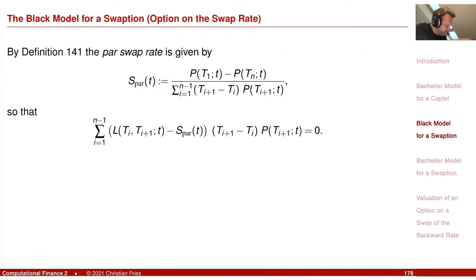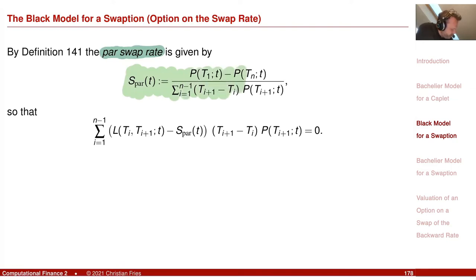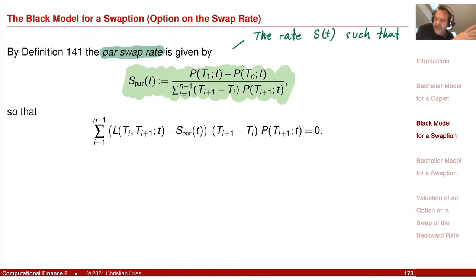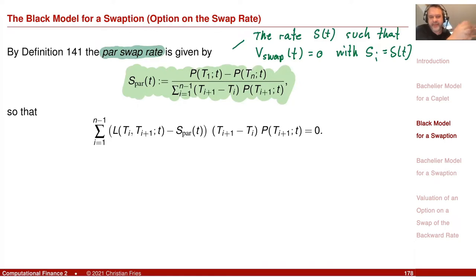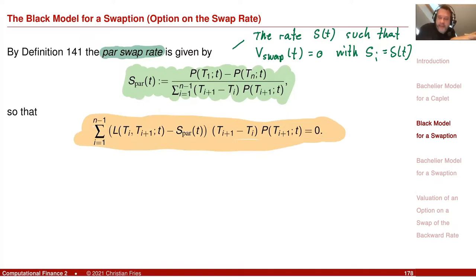We can derive a very short, very nice formula if we take a slightly different view. This involves rewriting the value of the swap. Remember that we defined an interest rate associated with the value of the swap — it was the par swap rate. We defined the par swap rate as the constant rate S such that the value of the swap is zero when all the S_i equal this special interest rate.